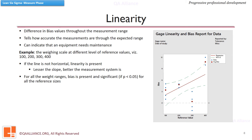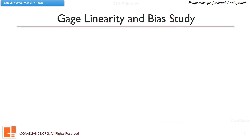So far we have covered the characteristics of the measurement system with respect to location, or accuracy. In the next lesson we'll see the characteristics from the precision point of view. Let us also learn how we can perform a gauge linearity and bias study in Sigma XL. This study helps in determining whether our gauge is measuring accurately or not.